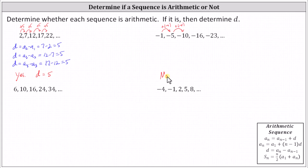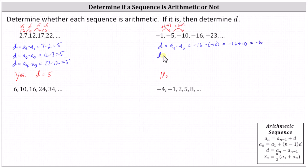Let's also determine a couple of values for the common difference d using the formula to confirm. Using a sub four and a sub three: d equals a sub four minus a sub three, which is negative sixteen minus negative ten, which simplifies to negative sixteen plus ten, which is negative six. Using a sub two and a sub one: d equals a sub two minus a sub one, which is negative five minus negative one, which is negative five plus one, which is negative four. We obtained a different value for d, and as soon as we do, we know the sequence is not arithmetic.